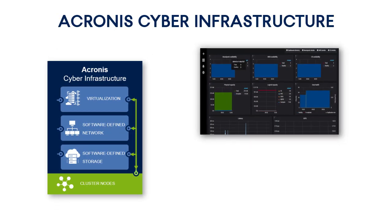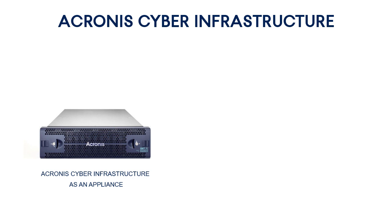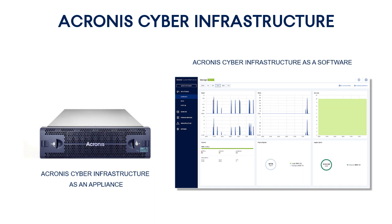Acronis Cyber Infrastructure represents a new generation of hyperconverged infrastructure targeted at both managed service providers and end customers. It is a scale-out, cost-efficient, and multi-purpose cyber protection solution that combines universal storage and high-performance virtualization. It provides a trusted solution that's been optimized to work with the Acronis Cyber Cloud suite of products. The Acronis Cyber Infrastructure exists in two forms for your convenience. If you're a service provider who would like to use a complete solution from a single vendor, you can get the Acronis Cyber Infrastructure as an appliance. Alternatively, Acronis Cyber Infrastructure as software works on industry-standard hardware, so you can leverage your existing IT infrastructure, install Acronis Cyber Infrastructure on your hardware, and get all the hyperconverged benefits from Acronis.